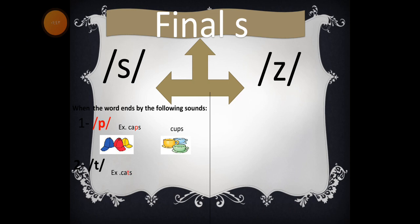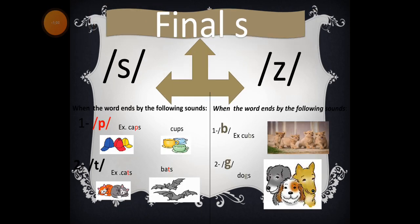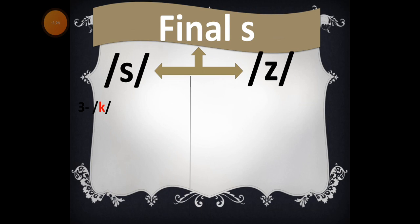For example: cats, cats, or bats, bats. Number three: the /k/ sound, for example ducks, ducks. Number four: the /f/ sound, for example cliffs.